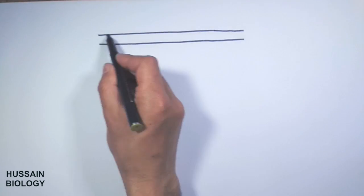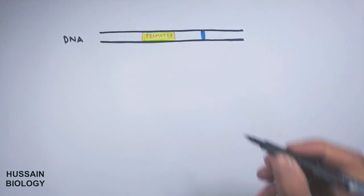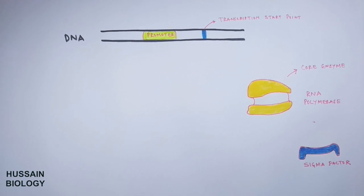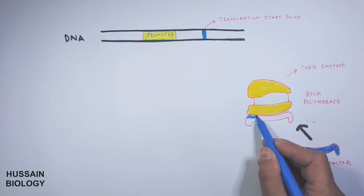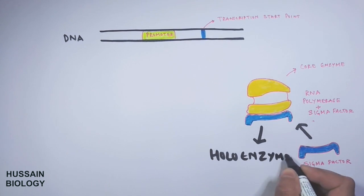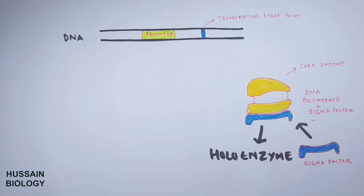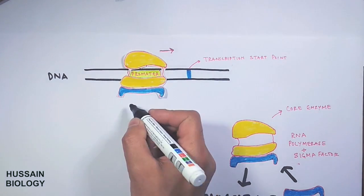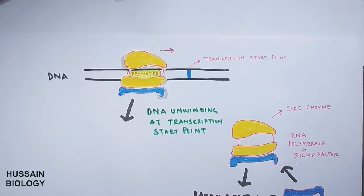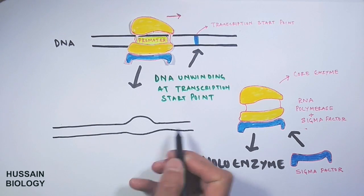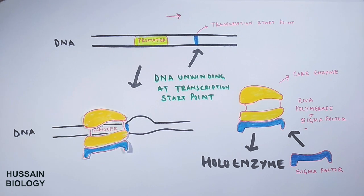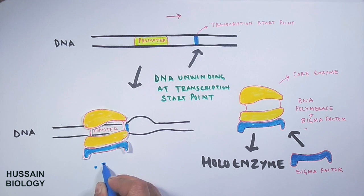Now let's see the transcription process in detail. In this diagram we have a DNA molecule with a promoter and start point shown, along with RNA polymerase and sigma factor separately. When transcription is to begin, the sigma factor combines with RNA polymerase first, rendering it into its active form called the holoenzyme. This holoenzyme recognizes the promoter on DNA, binds to it, and causes unwinding at the transcription start point, giving us the open complex form of DNA. From here, transcription initiation kicks in, where the polymerase first tries to initiate the process but fails — this is called abortive initiation.